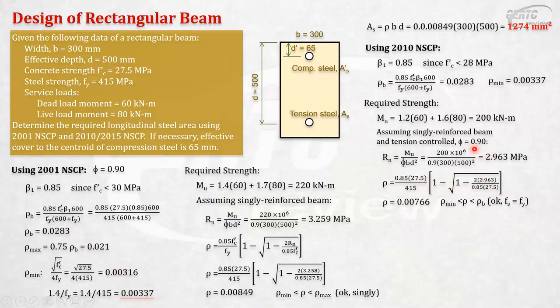Of course. So, we were correct in assuming 0.9. Okay. That tension steel will yield. Okay. But, this is not yet enough proof that 0.9 is what we will use. We still have to check later after we get the As. We need to check if this is really tension controlled. That's how complicated 2010 is.